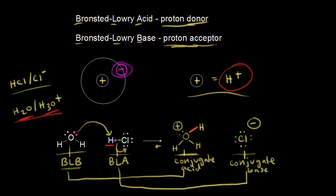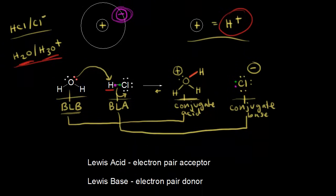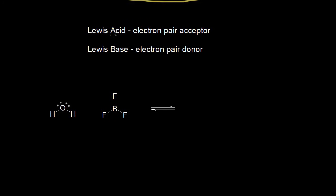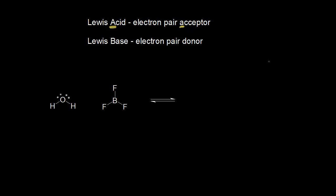Let's move on to the Lewis definition. A Lewis acid is an electron pair acceptor — a good way to remember this is the 'A' in acid for acceptor. A Lewis base is an electron pair donor. A helpful memory trick: take the 'b' in base and flip it to get a 'd' for donor.